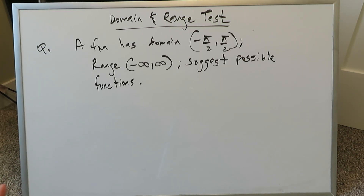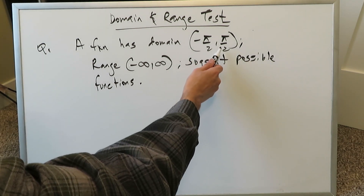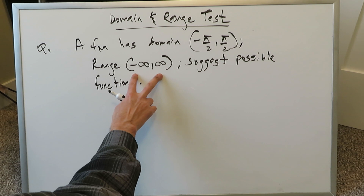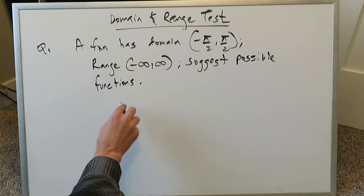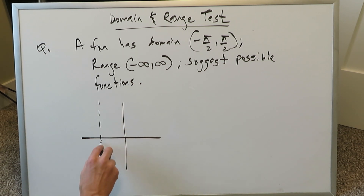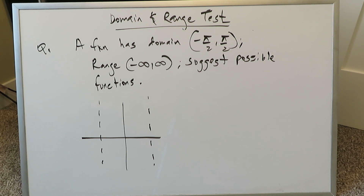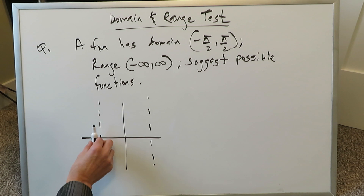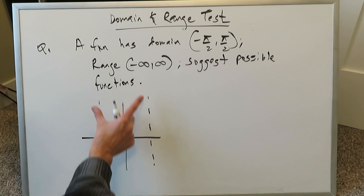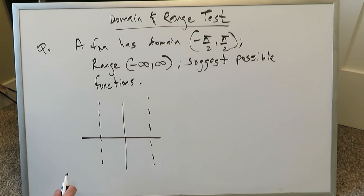Question number 4: a function has domain (−π/2, π/2) and range (−∞, +∞). Suggest a possible function or functions that fit this description — there could be more than one answer. When we look at minus π over 2 and π over 2 with circular parentheses, that indicates those endpoints are not part of the domain — they are asymptotic values. The function goes from minus infinity to infinity in range while x runs from minus π over 2 to π over 2, not including those bounds. What can this be?